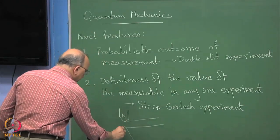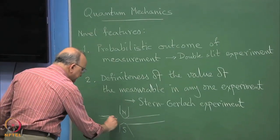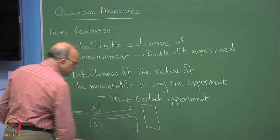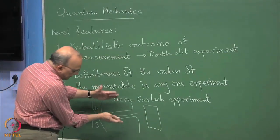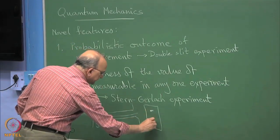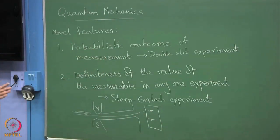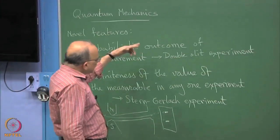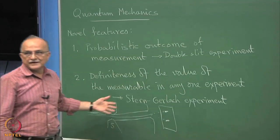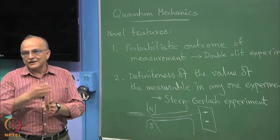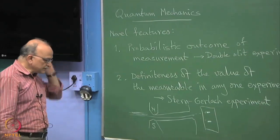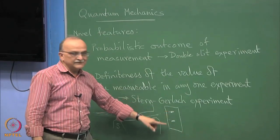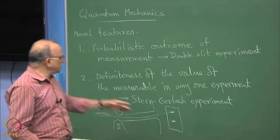In the Stern-Gerlach experiment, you have magnets with north and south poles, and you send a beam of polarized particles through. Because of the non-uniform magnetic field, the beam will split, but it will split precisely into 2 patches. The spin will be either plus half or minus half — it will not give in-between answers. Although which answer it gives is probabilistic.